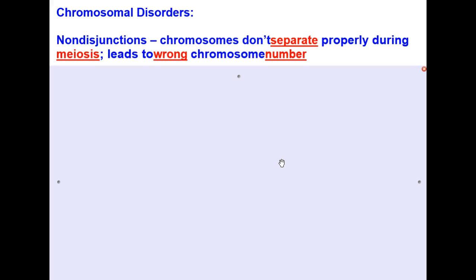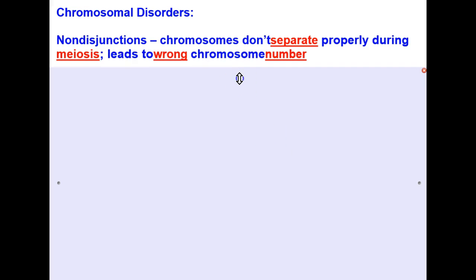You might remember that disjunction takes place during anaphase 1 when the homologous chromosomes split and separate. Well, if that doesn't happen properly, it leads to the wrong number of chromosomes in the cell. There are really two kinds of this.